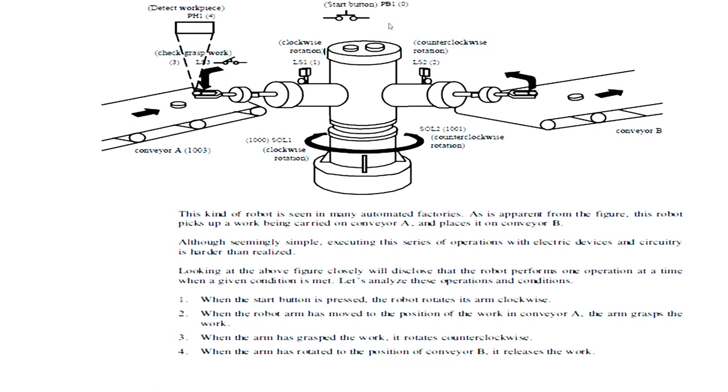When we will start this particular system or this particular robot, initially, the robot is at the position of conveyor B. When we will press start button PB1, as you can see here, robotic arm will start moving in clockwise direction. Now, it's very important for us to understand that what is the stop point for that robotic arm.